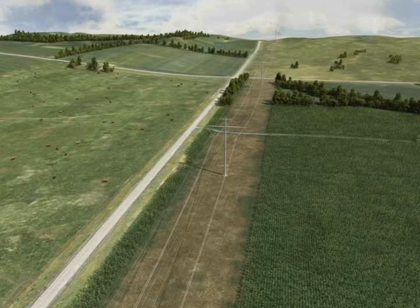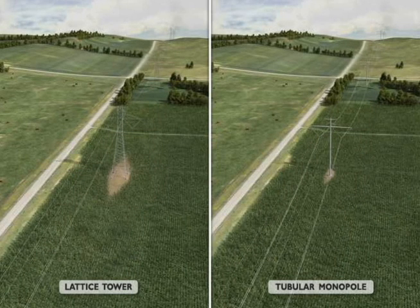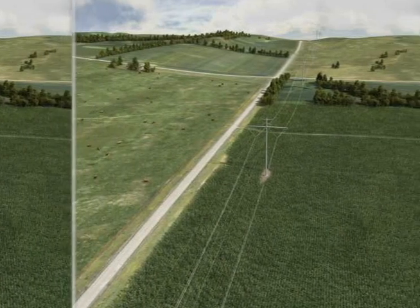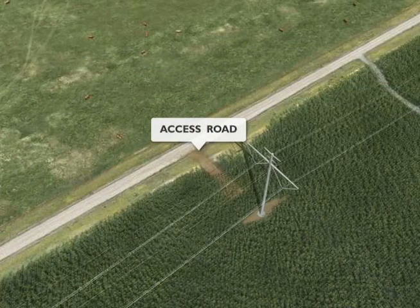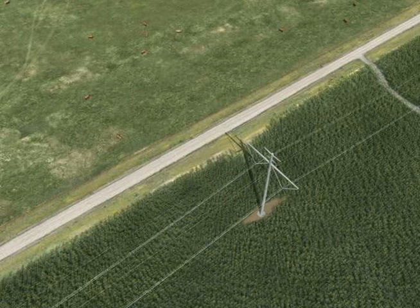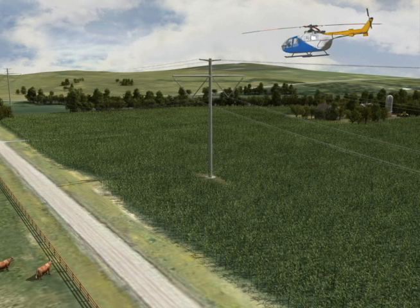Clean Line is committed to working cooperatively with landowners throughout the life of the transmission line to mitigate agricultural impacts and restore land use to as near to its original condition as practicable when construction is complete. Temporary access roads will be restored and existing roads will be left in a condition equal to or better than their condition prior to construction. Following construction, the right-of-way area will continue to be maintained and monitored on a regular basis. Visual inspection of the line typically involves a helicopter, however maintenance work is usually performed by ground crews.